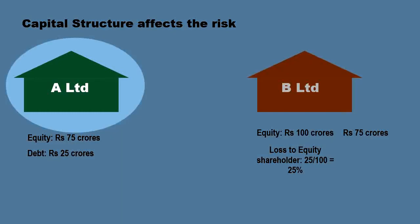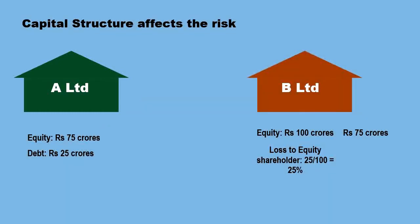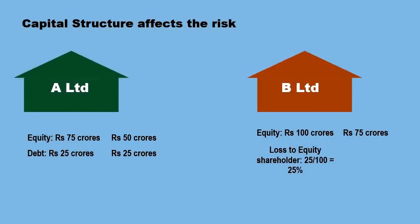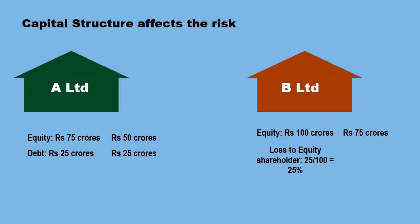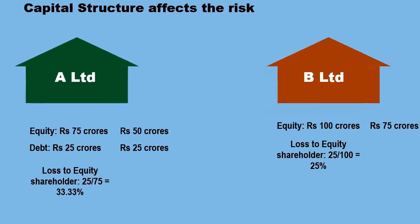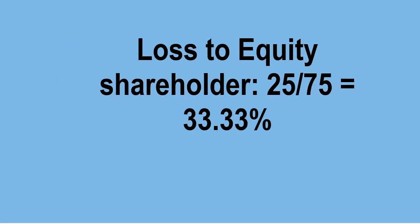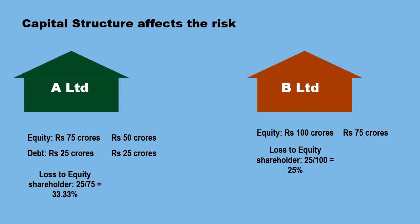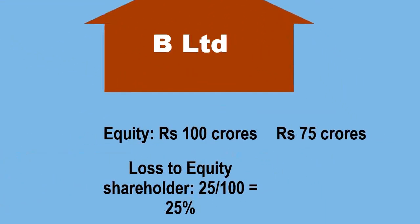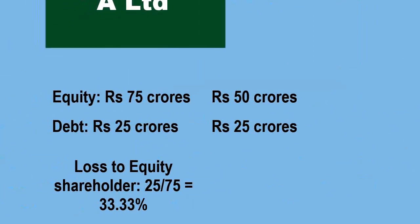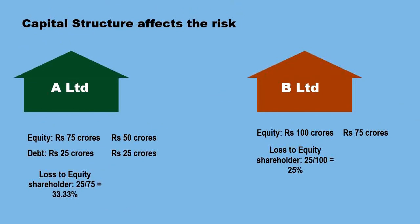Now let us see what happens in the case of A Limited. Out of the realization of 75 crores, 25 crores will first be paid to the debt holders, and the balance Rs. 50 crores will be paid to the equity shareholders against their dues of 75 crores. The equity shareholders have realized only 50 crores against their dues of 75 crores, meaning they have lost 33.33%. So the presence of debt increases the risk to the equity shareholders.